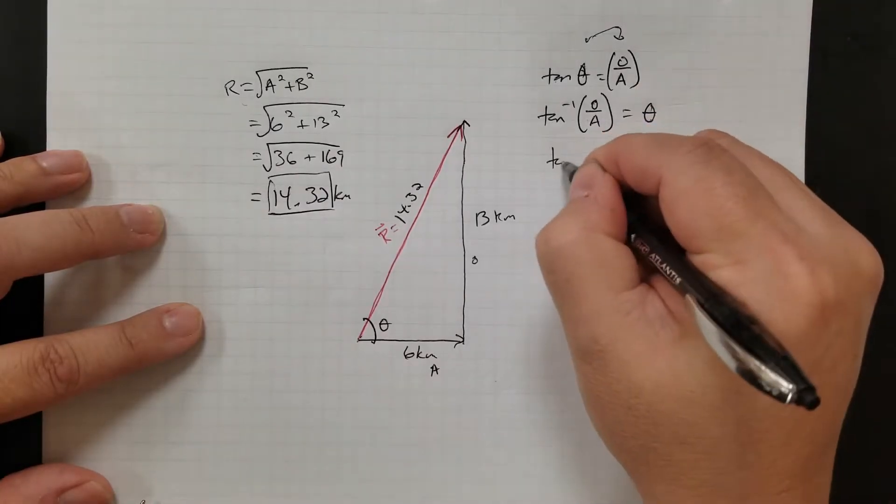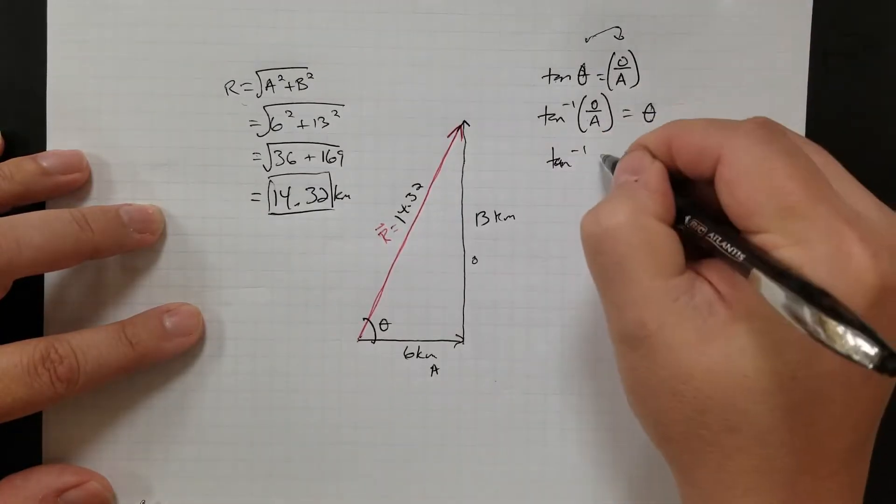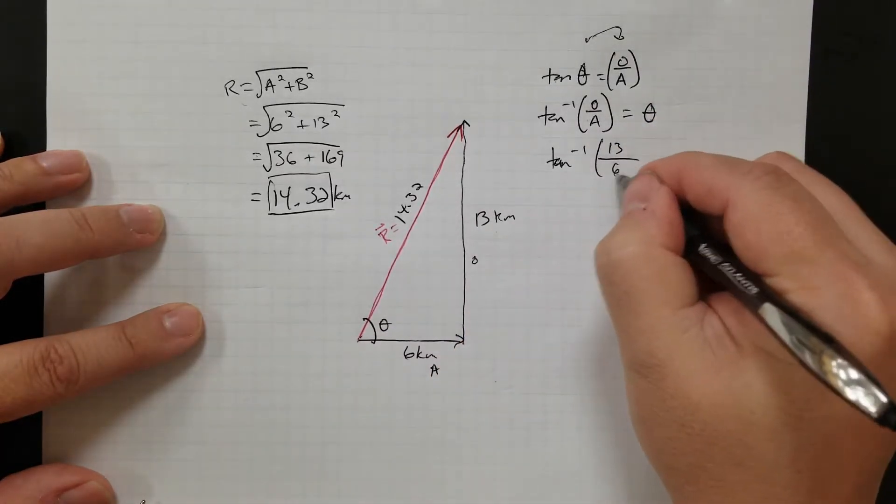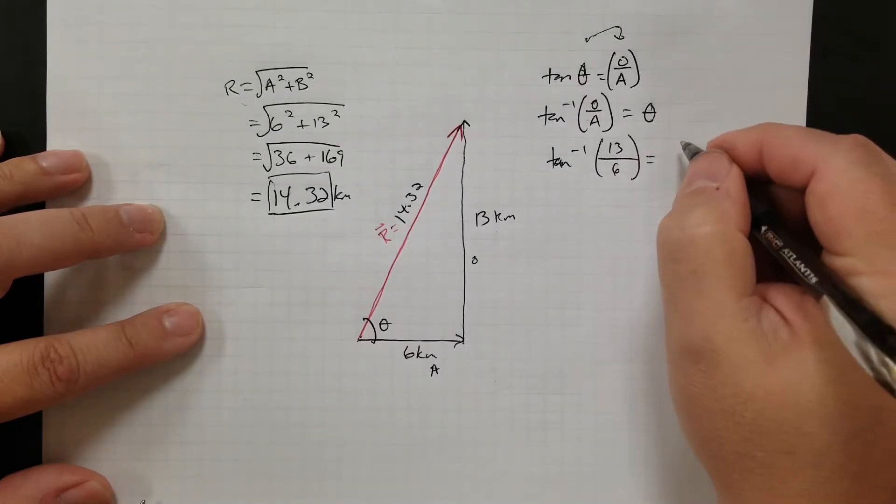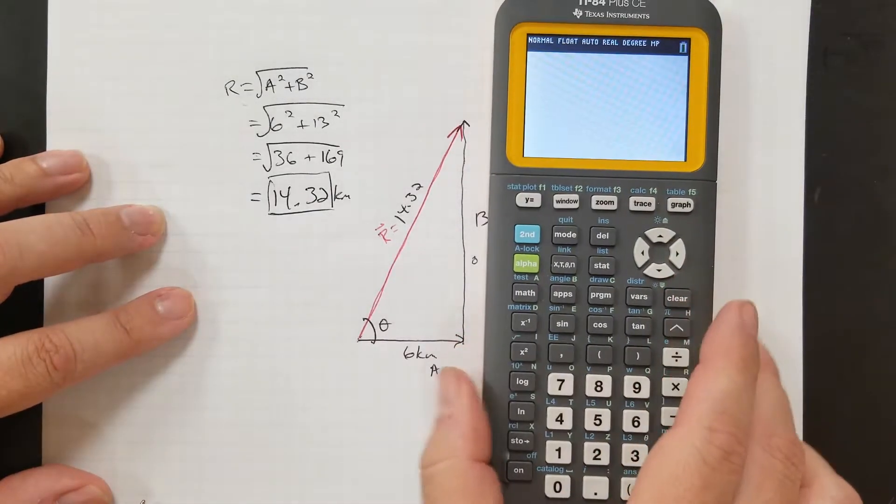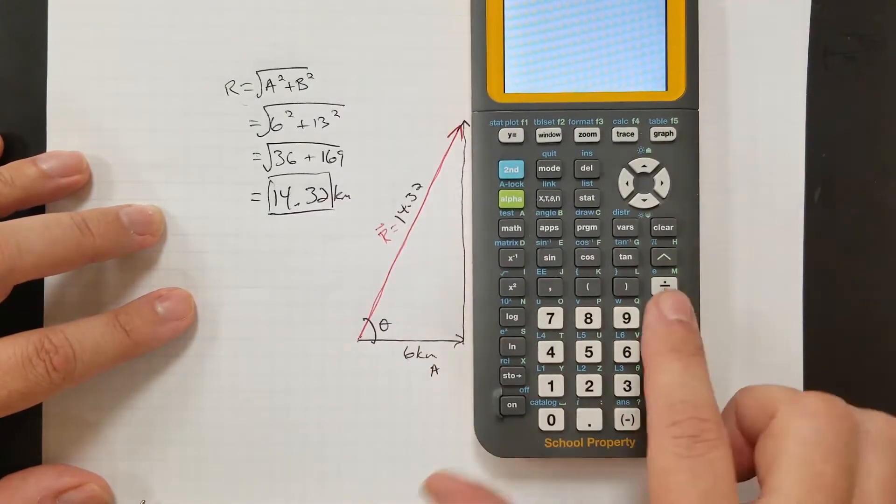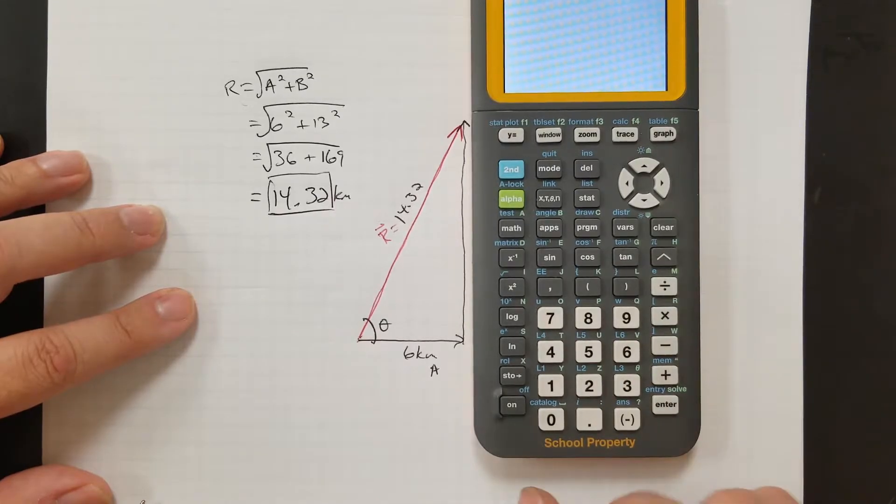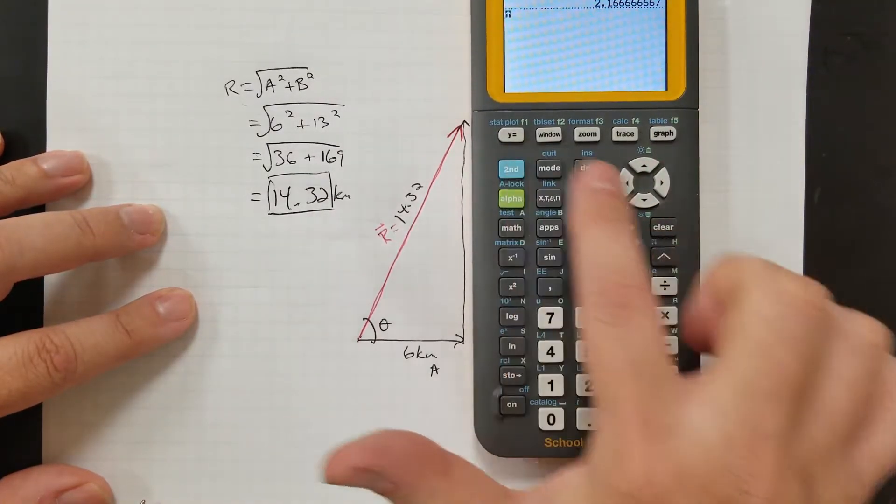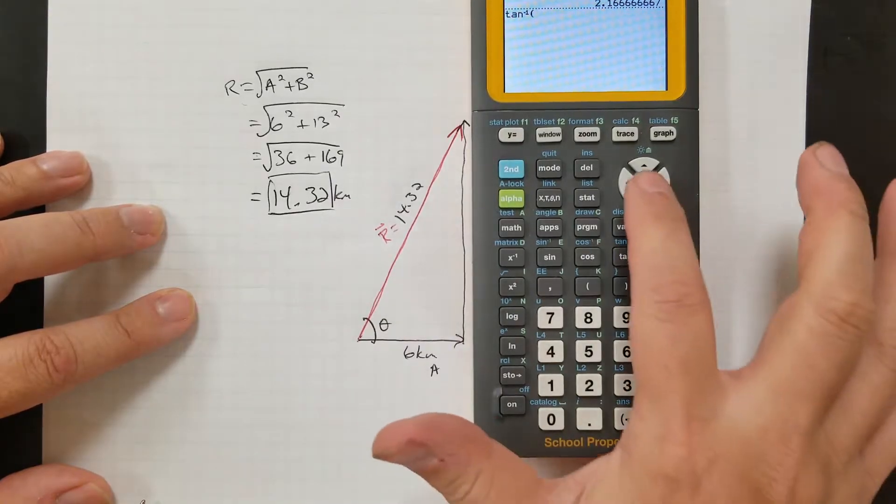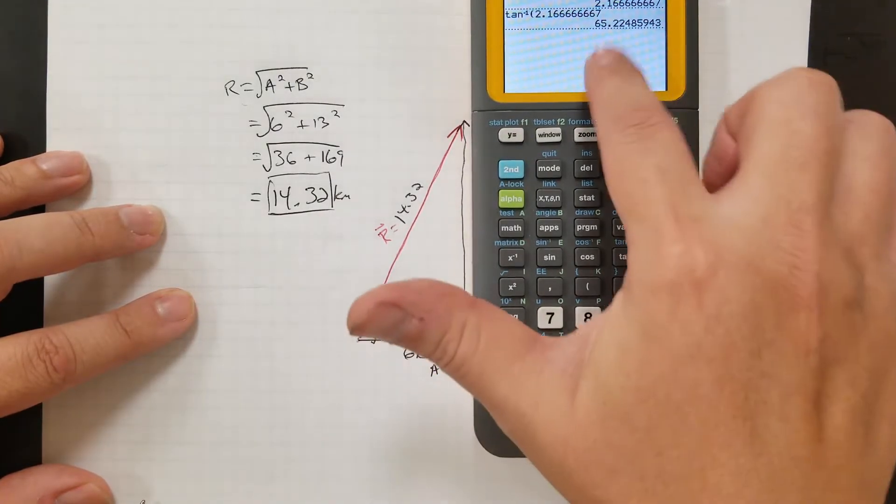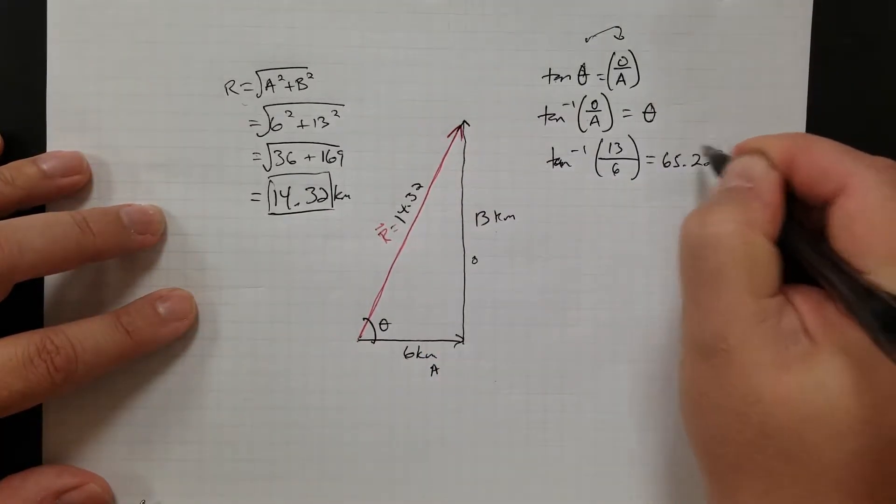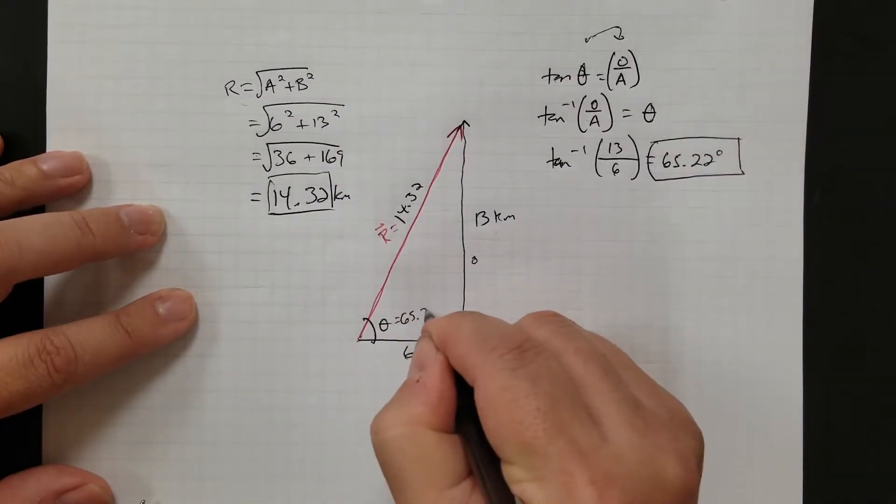And now I can plug in what I know. So I take the inverse tangent or arc tangent of 13 is my opposite, 6 is my adjacent. That'll give me my angle. And so the way to do that on your calculator is, let me see if I can put this right. So you want to do 13 over 6 first, and then I'm going to take the inverse tangent by going second tangent of that answer. And that gives me 65.22 degrees. So equals 65.22 degrees. That's this angle, 65.22.